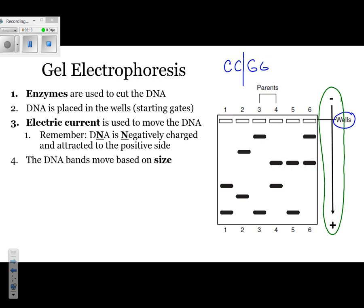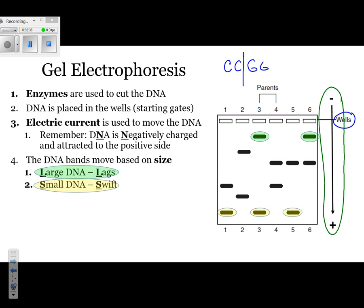The DNA bands move according to size. The larger bands are going to lag because they are heavy, so they will be closest to the wells — they are represented by the green highlighted bands. The smaller bands are swift because they are lighter and can travel much further faster. The smaller bands are represented by the yellow highlighted bands.